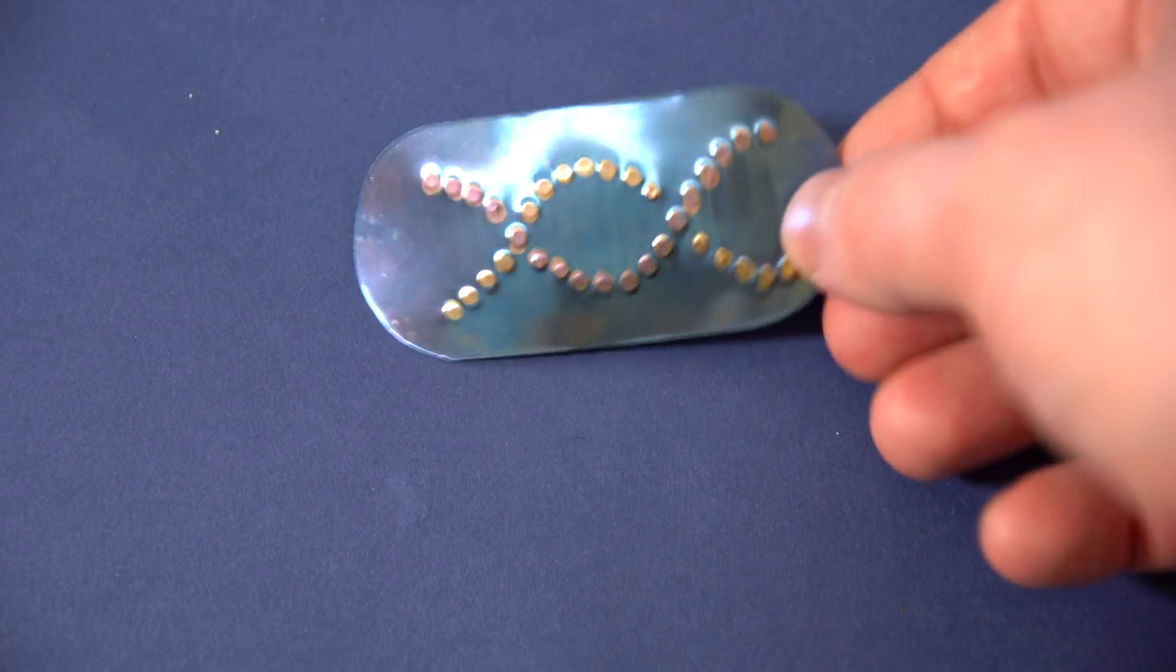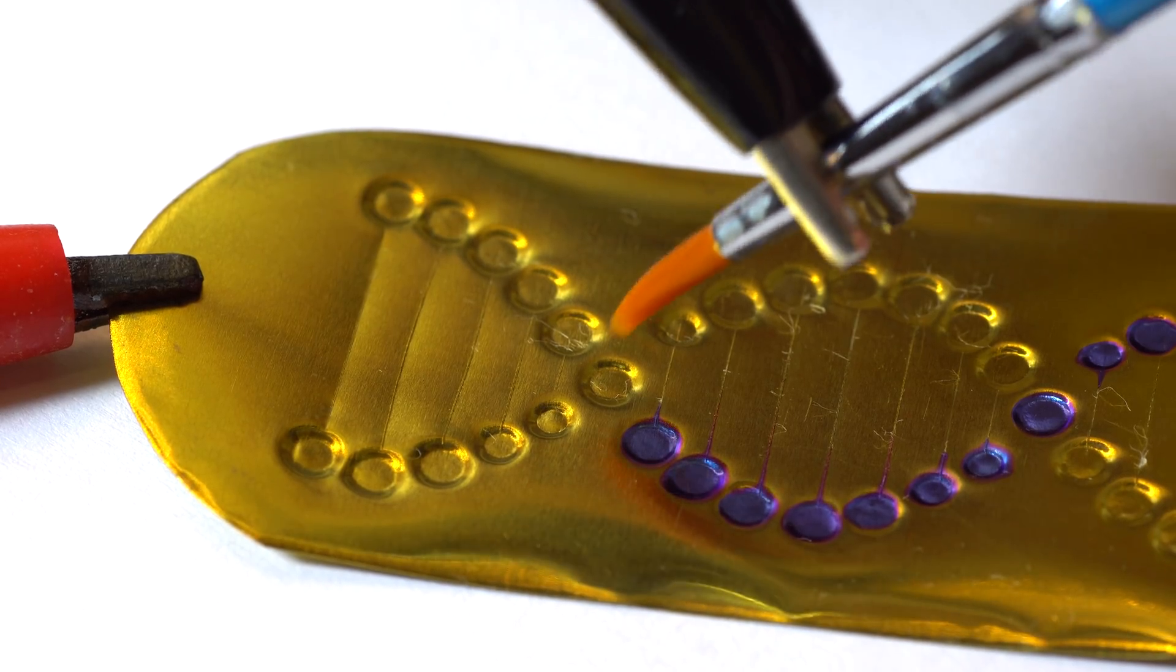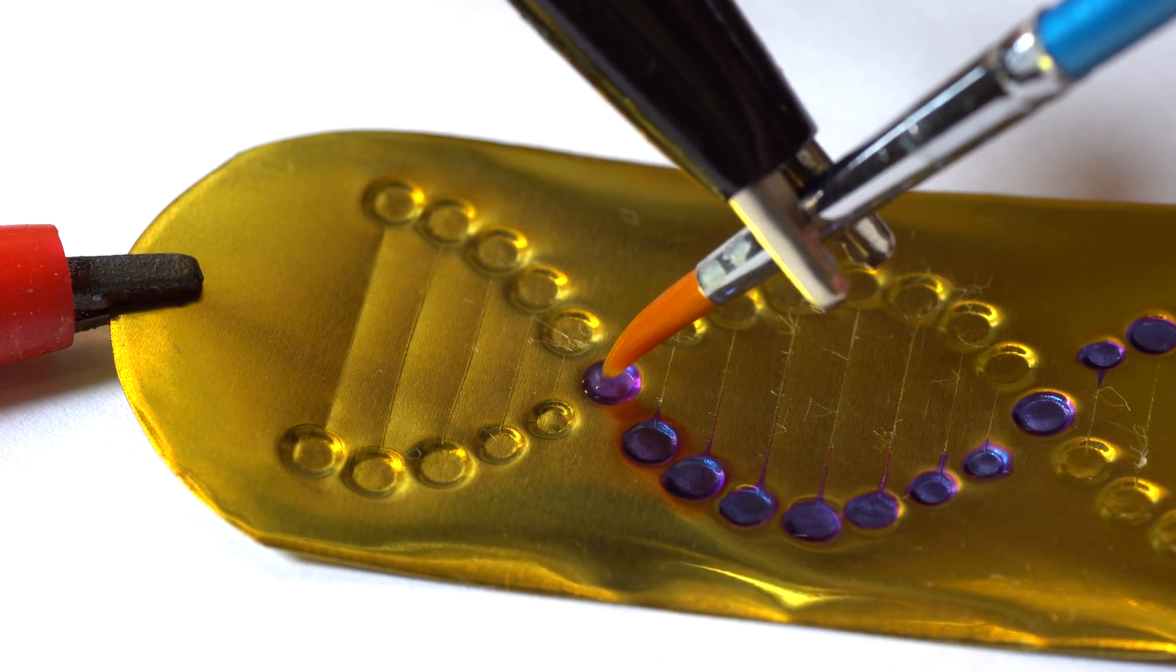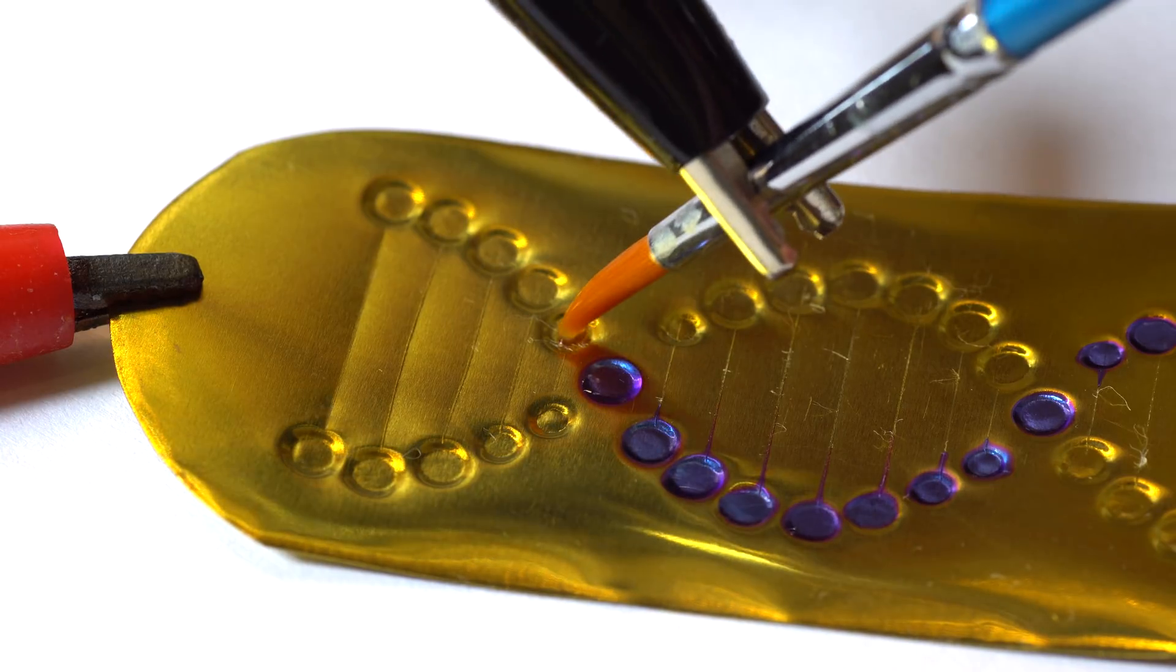However, it doesn't really look like gold here, so I made another one and anodized it to the gold color at voltage of 60 volts. After that, I increased the voltage to 95 volts and made some beautiful blue dots.